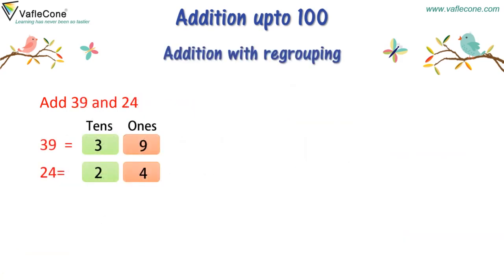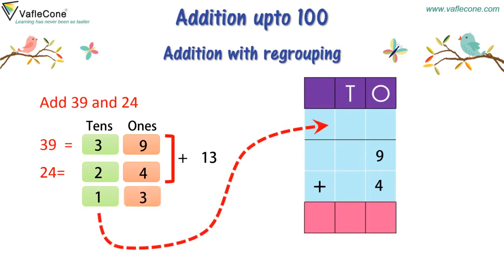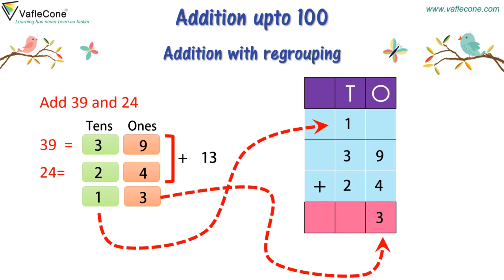Addition with regrouping is similar to before. But here, when we add numbers at the ones place — that is 9 and 4, which is 13, or 1 ten and 3 ones. Then when we add 3 and 2, we will have 1 extra for addition as we got after regrouping of 13. So we add 1 plus 3 plus 3 plus 2, which is equal to 6. So the answer is 63.